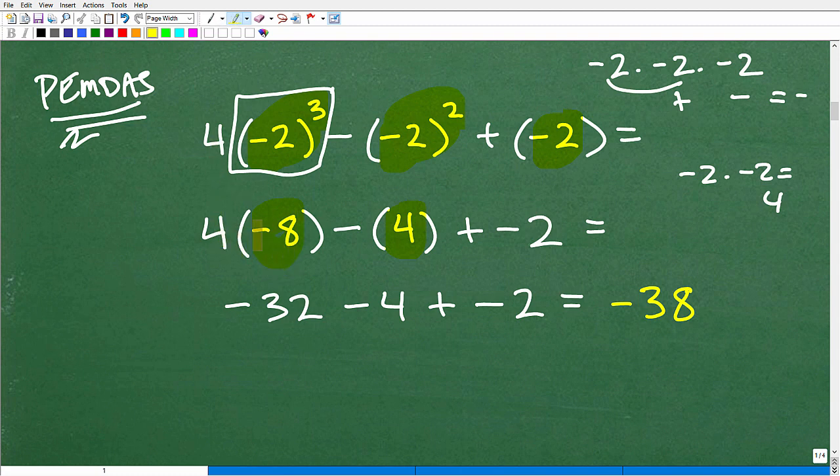All right. Let's continue on. So I have 4 times negative 8. Now you need to do what? Multiplication or division from left to right. So here I'm going to do my multiplication. So 4 times negative 8. Positive times negative, that's negative. That's negative 32. And there's nothing to do over here. So I have a negative 4, negative 2. So a negative, a negative, negative. My answer is going to be a negative 38. 32, 4, and 2. Negative 38.